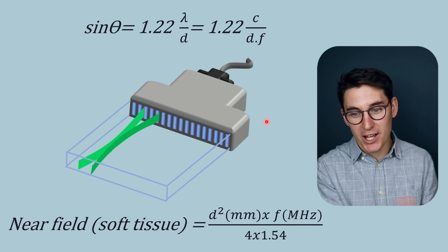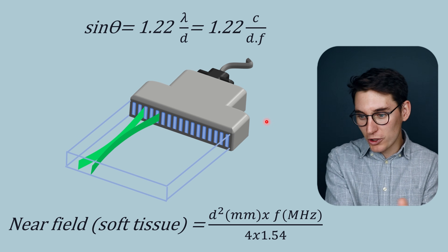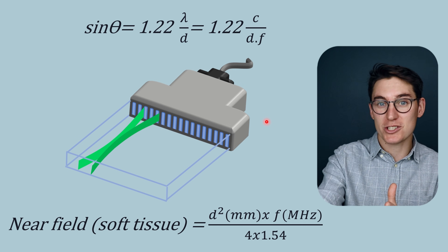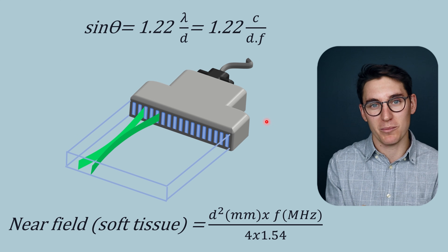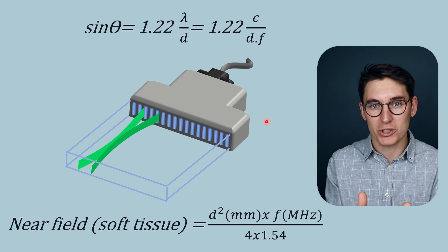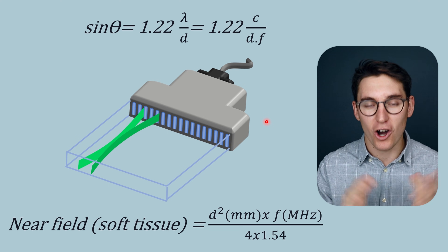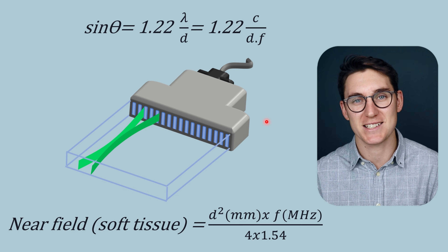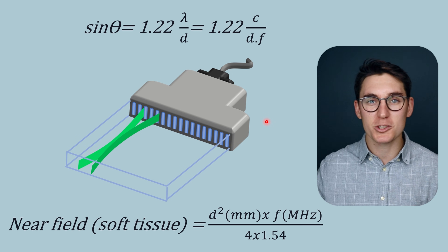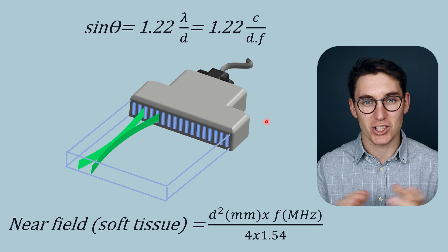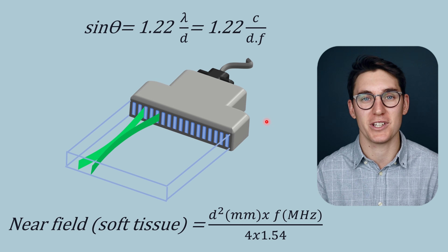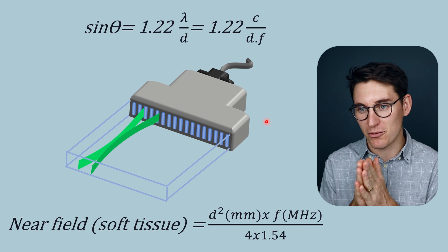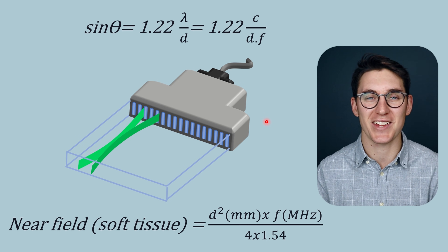The take-home point is that increasing diameter and frequency increases near-field distance and focal point depth, while decreasing beam divergence. In the next talk, we'll look at the mechanisms that allow us to change focus, steer the beam, and explore spatial compounding for crisper ultrasound images, before moving on to ultrasound resolution. If you're studying for an exam, there's a linked question bank in the description with curated past paper questions answered in video format.